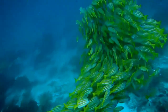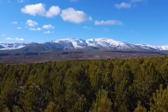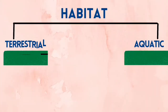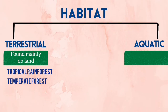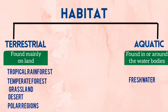All the habitats are divided mainly into two groups: terrestrial and aquatic. Terrestrial habitat is a land-based habitat. Main examples of terrestrial habitats are tropical rainforest, temperate forest, grassland, desert and polar regions. Aquatic habitat is a water-based habitat. It is of two types: freshwater and marine.